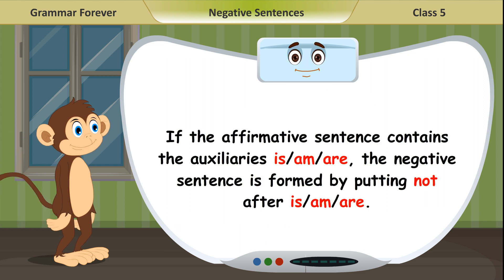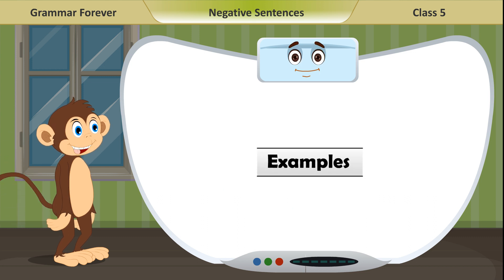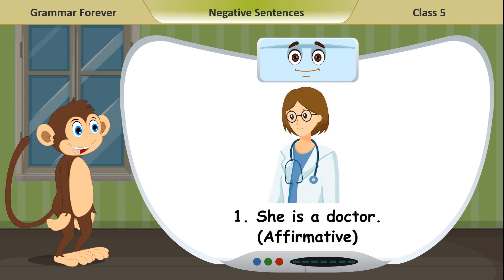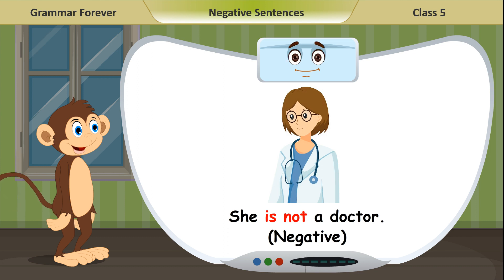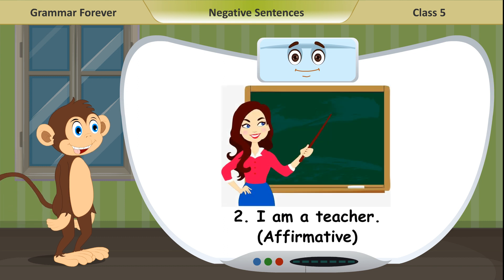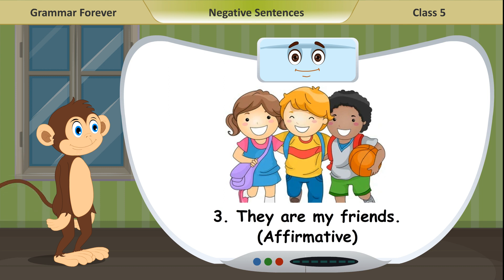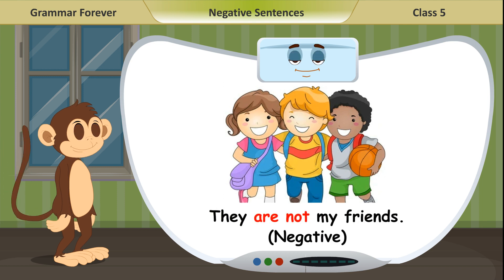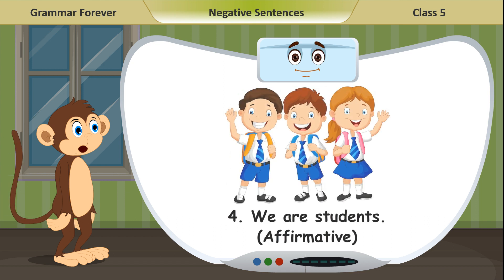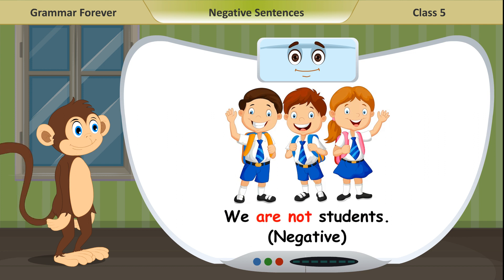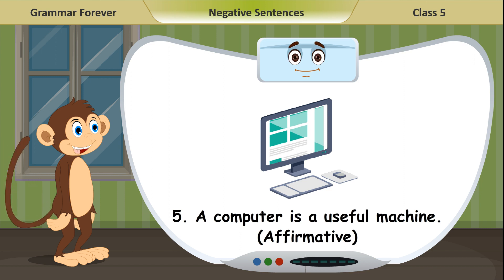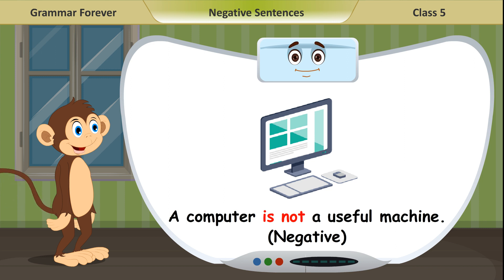If the affirmative sentence contains the auxiliaries 'is', 'am', or 'are', the negative sentence is formed by putting 'not' after is, am, or are. Examples: 7. She is a doctor (affirmative). She is not a doctor (negative). 8. I am a teacher (affirmative). I am not a teacher (negative). 9. They are my friends (affirmative). They are not my friends (negative). 10. We are students (affirmative). We are not students (negative). A computer is a useful machine (affirmative). A computer is not a useful machine (negative).